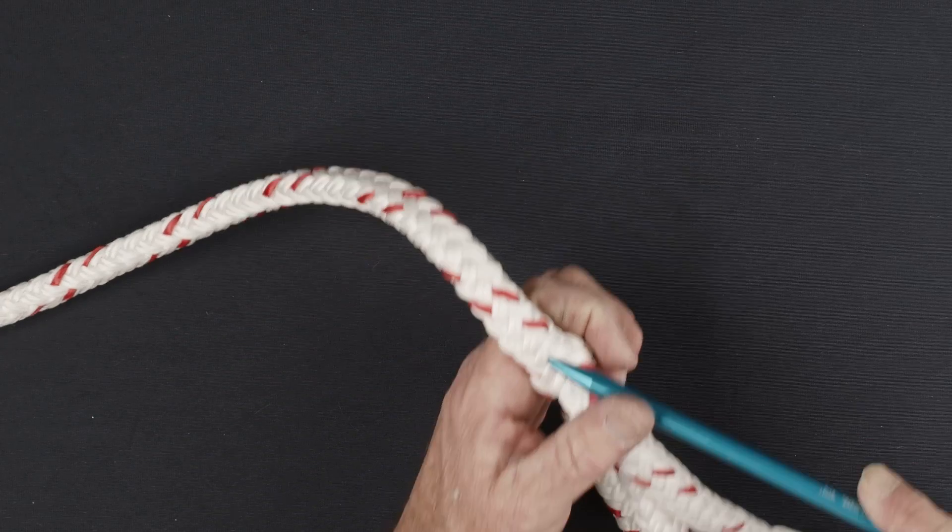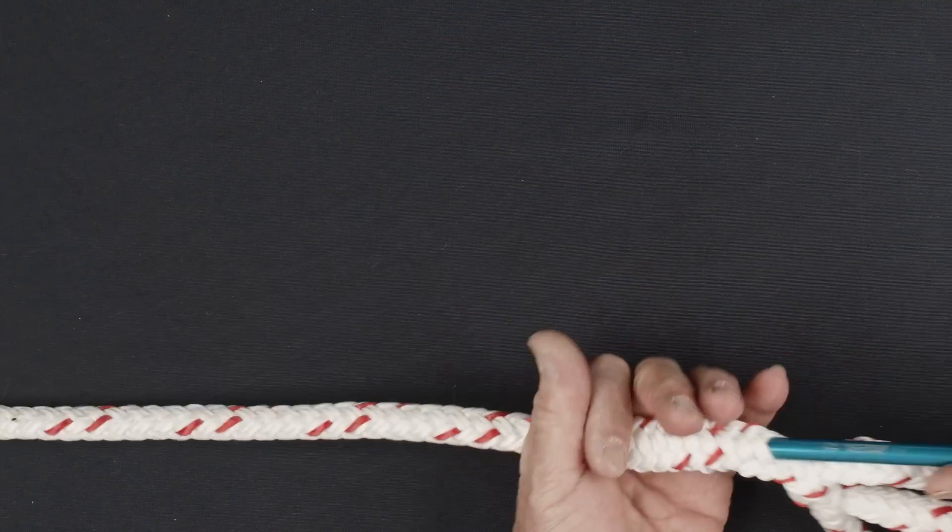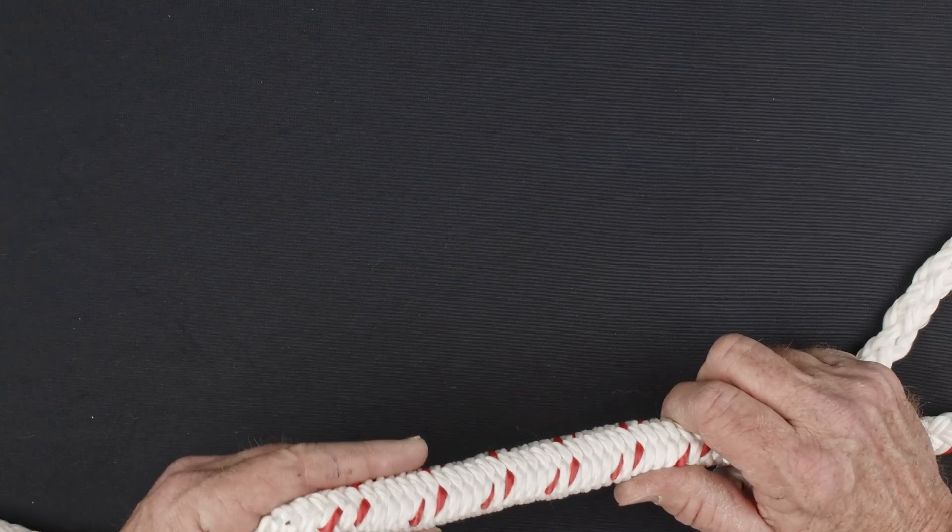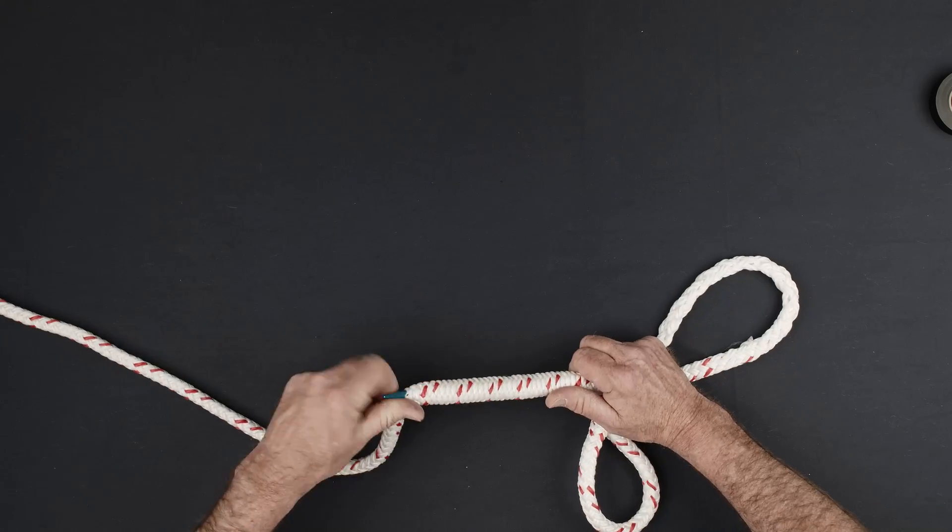Count an additional two sets of strands from the location the rope previously exited and insert the fid into the hollow center of the rope. Pass the fid all the way through to the exit mark, being careful not to snag the inside of the rope.